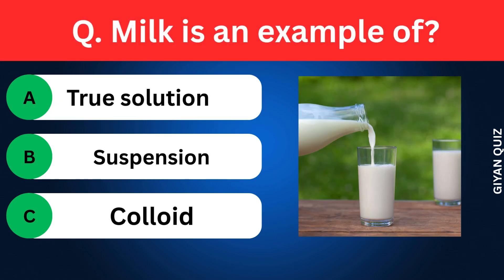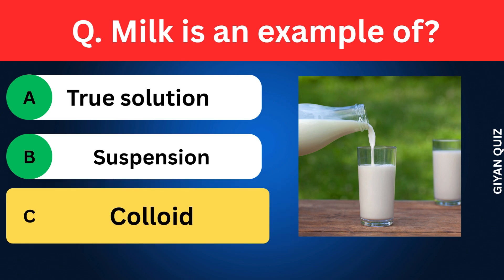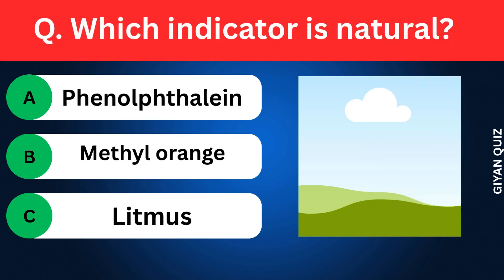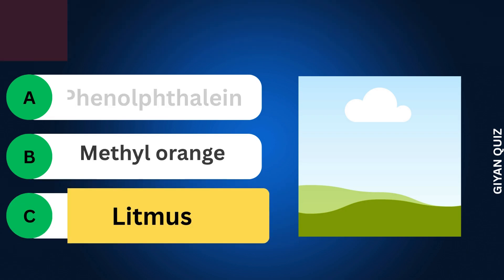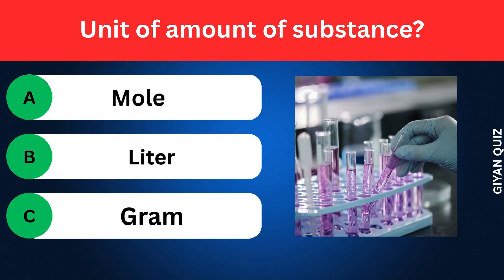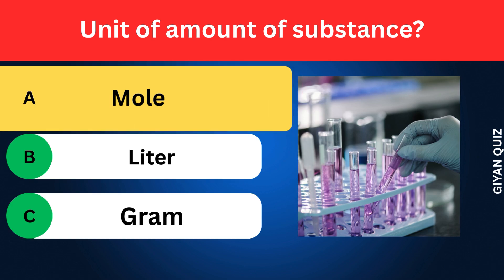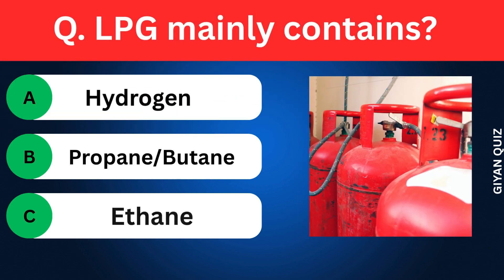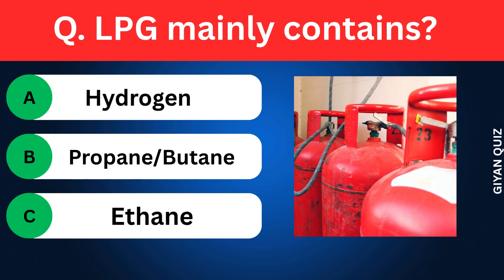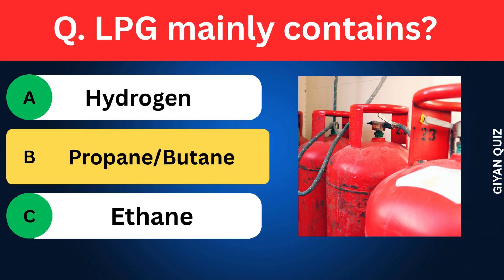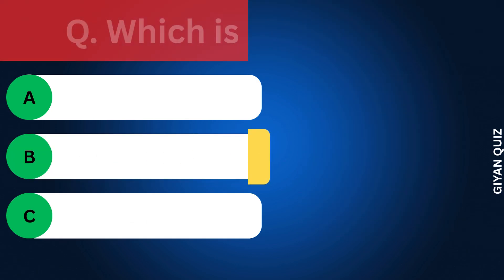Milk is an example of? Options: True solution, Suspension, Colloid. Correct answer: colloid. Which indicator is natural? Options: Phenolphthalein, Methyl orange, Litmus. Correct answer: litmus. Unit of amount of substance? Options: Mole, Litre, Gram. Correct answer: mole.